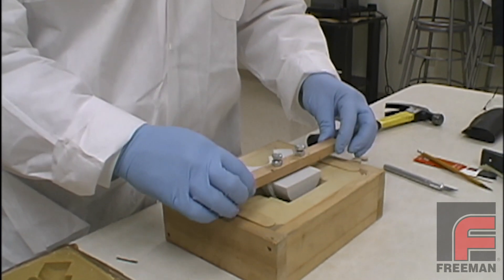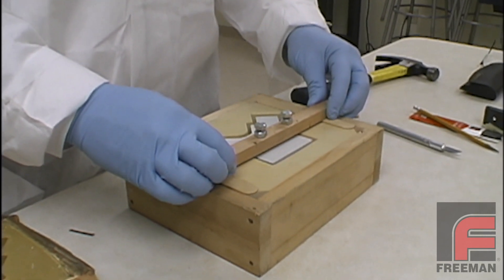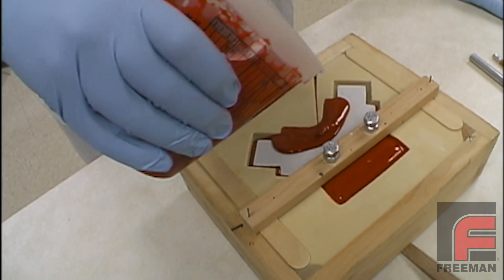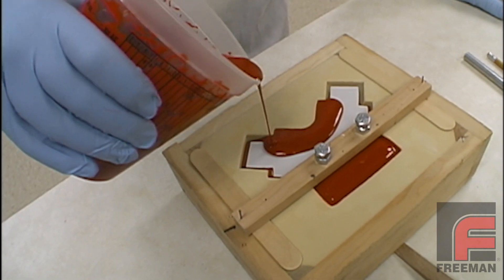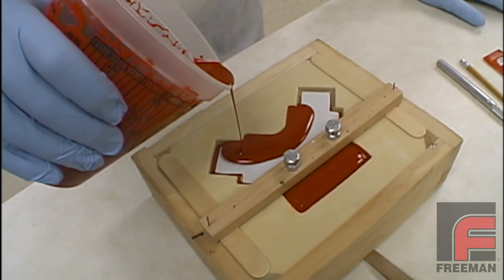Surface casting is a process where you use an inexpensive plug to serve as the core of your part and then cast the surface of your part with a high-quality epoxy or urethane elastomer.